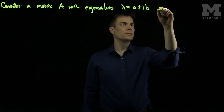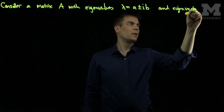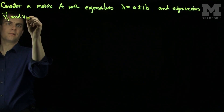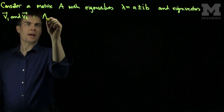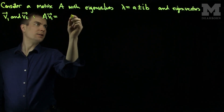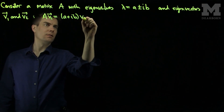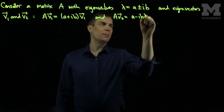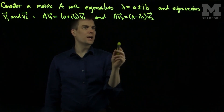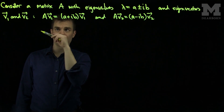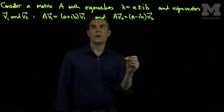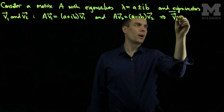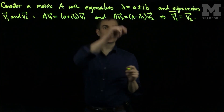The eigenvectors v1 and v2 satisfy A·v1 = (a+ib)·v1 and A·v2 = (a-ib)·v2. In other words, v2 is the eigenvector corresponding to a-ib and v1 corresponds to a+ib. We can see that by taking the complex conjugate, these eigenvectors are conjugates of each other, so v1-bar equals v2 — they are complex conjugates, just as the eigenvalues are complex conjugates.